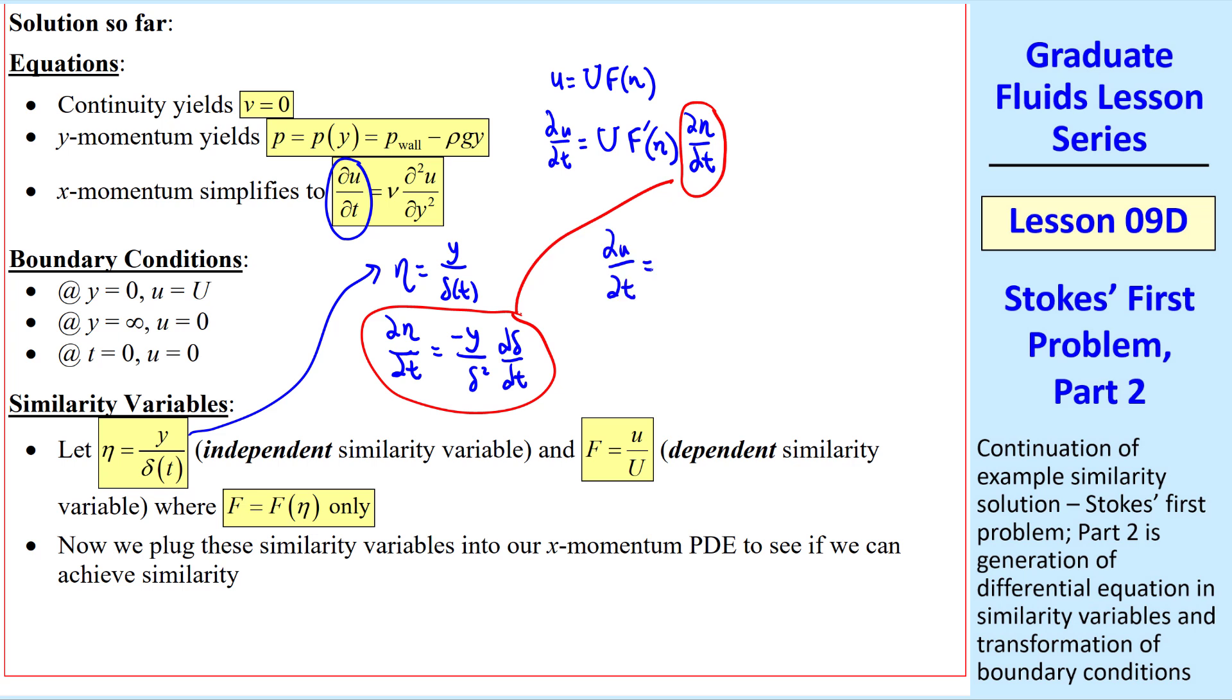Plugging this in, we get ∂u/∂t is minus U F'(η), and recognizing y over one of these deltas as eta itself, η/δ dδ/dt. This becomes the left-hand side of our equation.